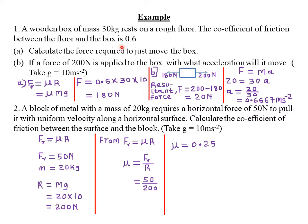The coefficient of friction is given as 0.6. Remember, it is a constant and a ratio, so it has no units. So frictional force = 0.6 × 30 kg × 10 N/kg, which gives us 180 newton. The SI unit for force is newton, so the final answer for frictional force is 180 newton.